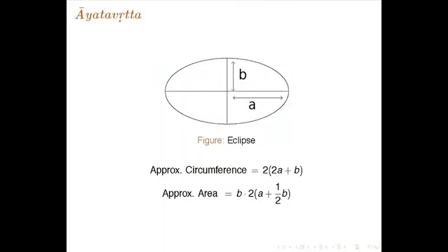For the first time he is talking of a dheerga vrutta or ayata vrutta, which is essentially an ellipse. We do not know whether he meant an ellipse, but it is some kind of dheerga vrutta where one side is elongated with respect to the other. The approximate circumference is given as 2(2a + b), where b is the shorter radius and a is the longer radius, and approximate area is given as b × 2(2a + b).